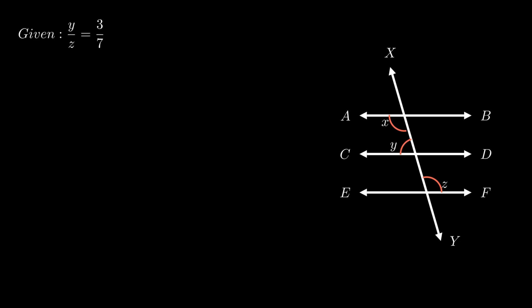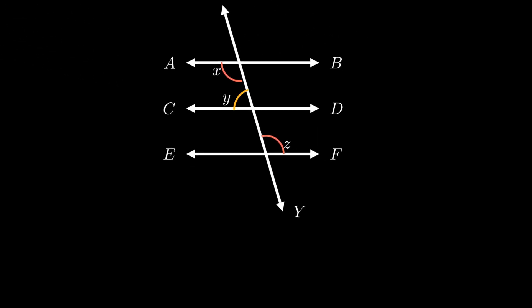To solve this problem we need to connect the given ratios to their corresponding values. Let the number required for simplifying the given ratios be K. Therefore angle Y equals 3K and angle Z equals 7K. From the figure, angle Y and angle Z do not have any direct relationship as angle Y is exterior to parallel line CD and angle Z is interior to parallel line EF.